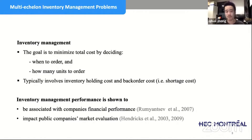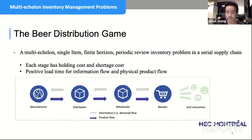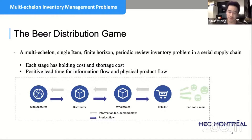Today our study focuses on the beer distribution game, a game initially introduced in an MIT supply chain classroom. The professor created this class to show that in a supply chain it's very important to communicate information and make the right order quantities. The supply chain means that when you order something it involves more than one party — when we buy a beer, the retailer orders from the wholesaler, the wholesaler from the distributor, and the distributor from the manufacturer.